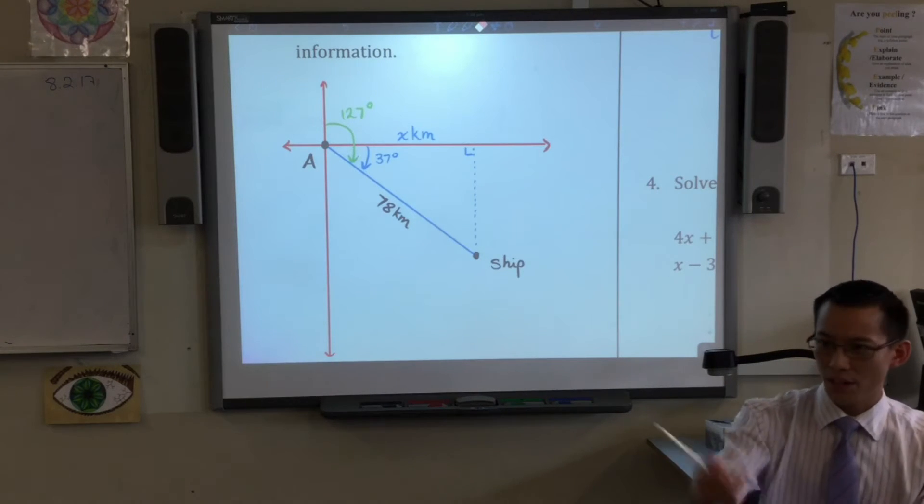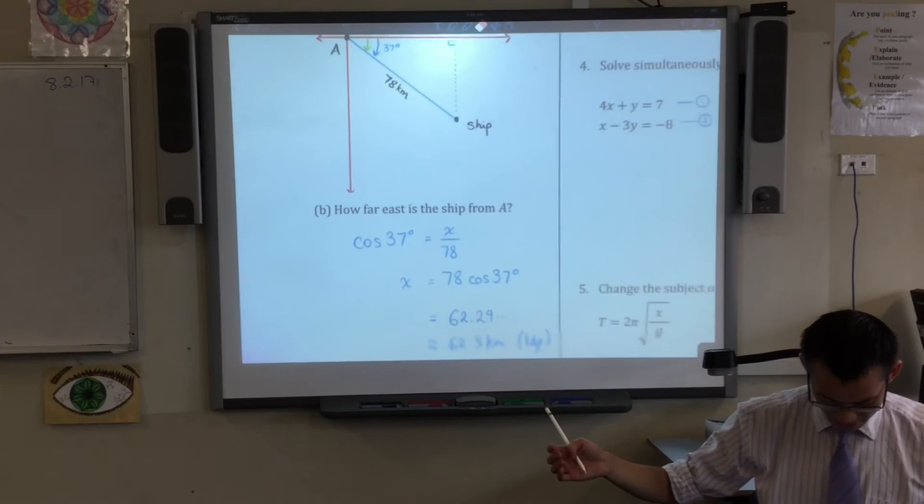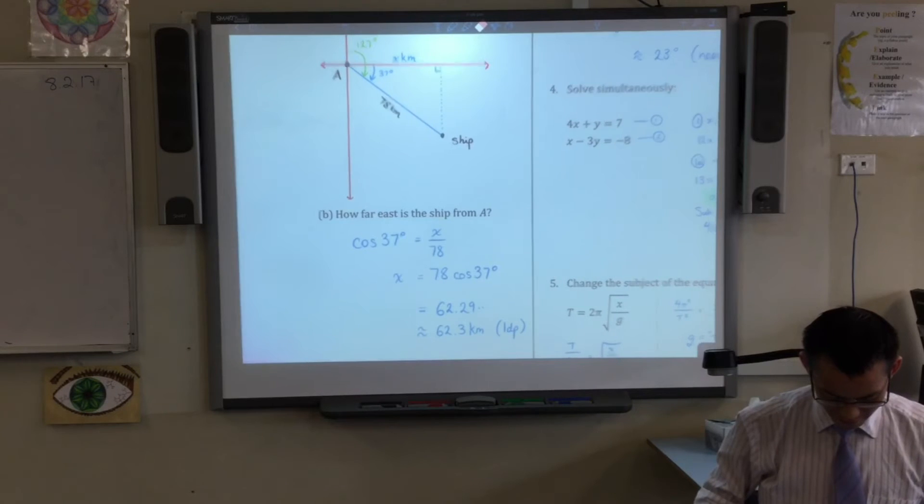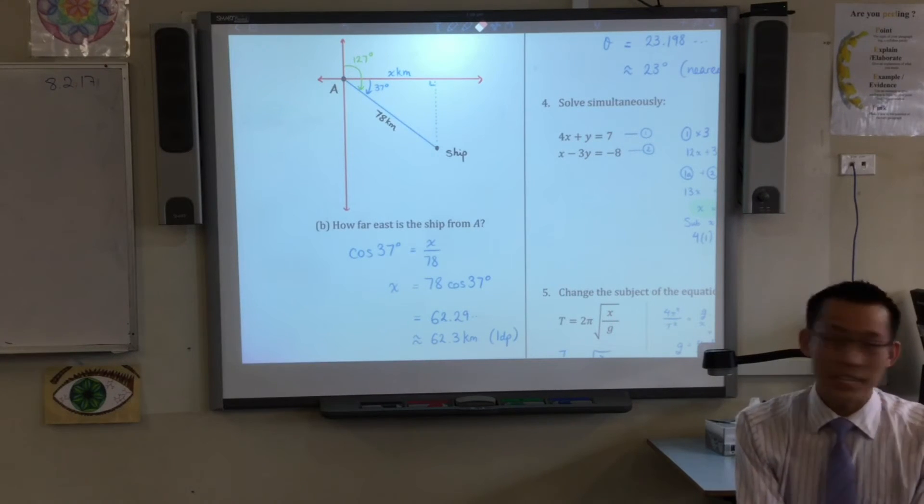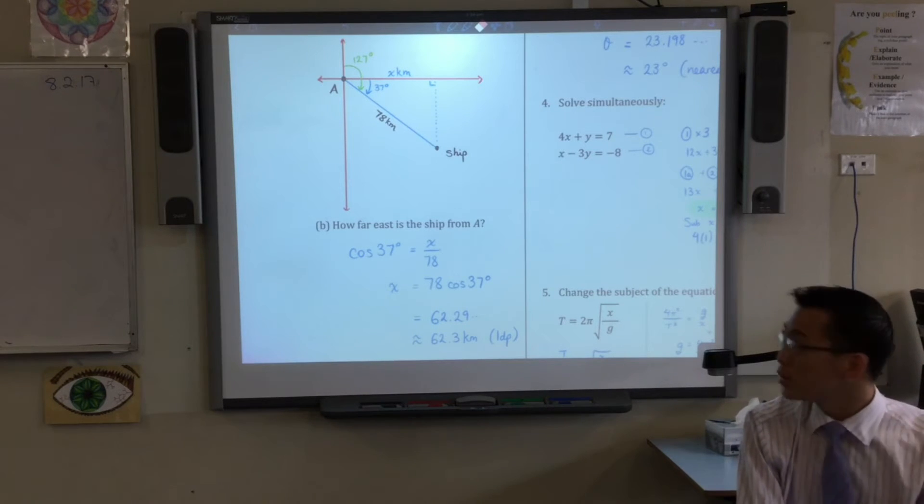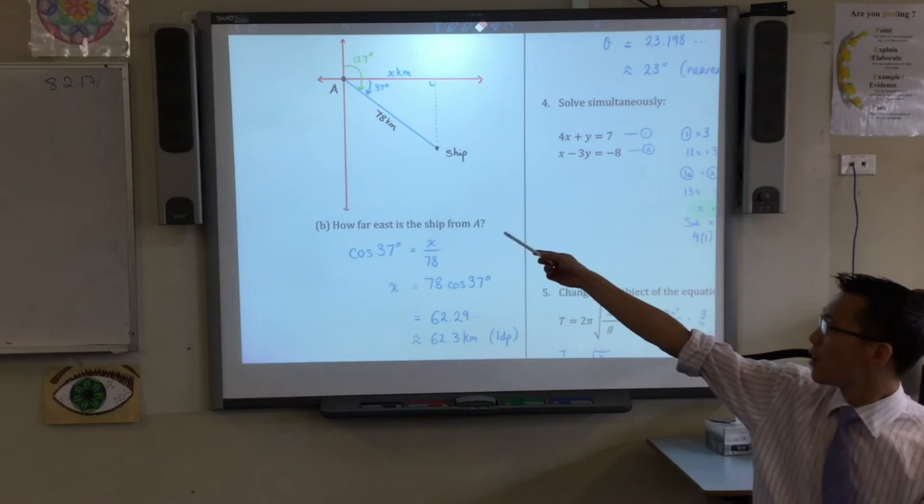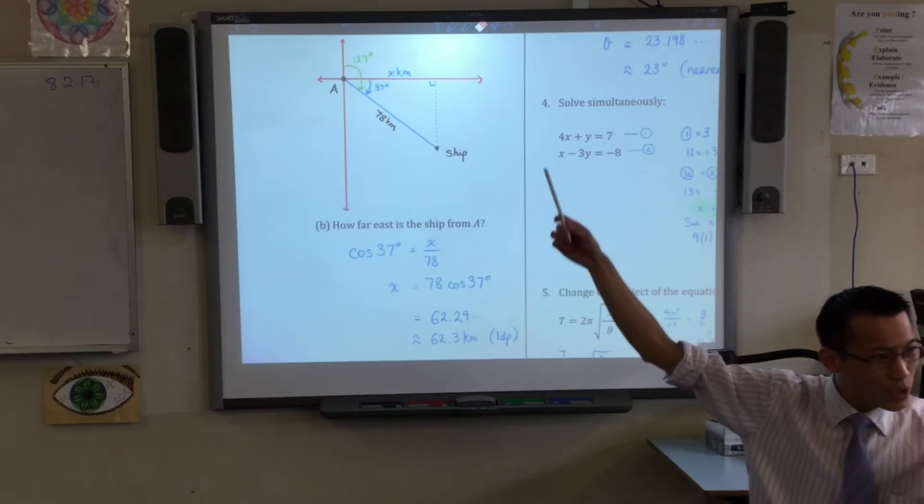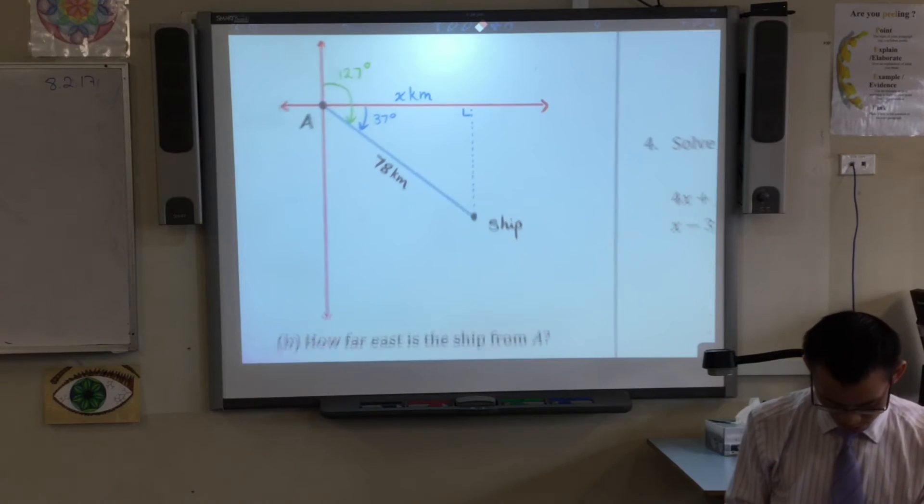Here's my answer. You can see what I've had to do is in my diagram the 127 degrees is useful, but it's not inside the triangle I need. Do you see what I've done? 37 is that little angle inside the triangle - that's the one I want to work with.